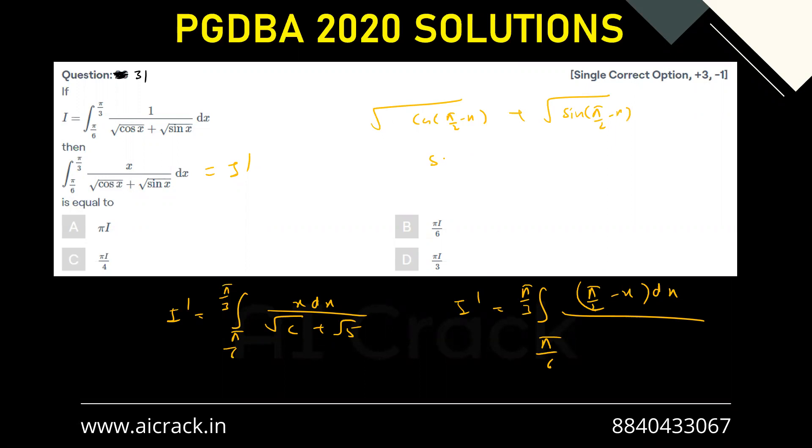Eventually I'll be getting again under root sine x plus under root cos x only. So denominator stays the same. That would give me under root cos x plus under root sine x only.